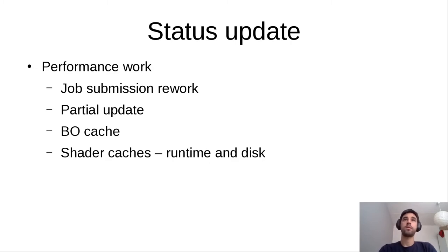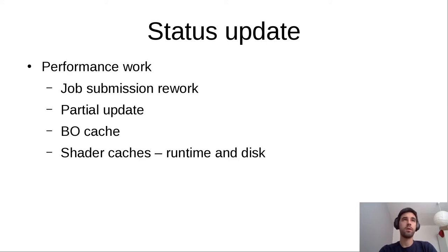On to the status update itself — I went over our git history and tried to find the most notable work from the past couple of years. The first is the job submission rework, which was pretty important. Before, we only had a single queue for a job, so if you did a framebuffer switch we would always have to flush all queued work. After this rework we have multiple queues, so the driver performs much better in situations where you're switching framebuffers frequently. There has also been enablement for partial update and framebuffer invalidation extensions, which are pretty important for the tiling rendering model.